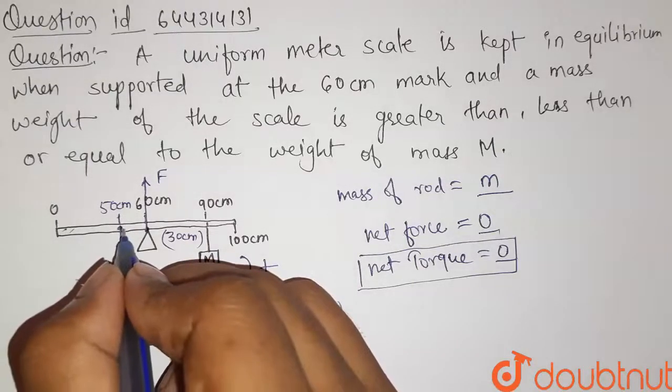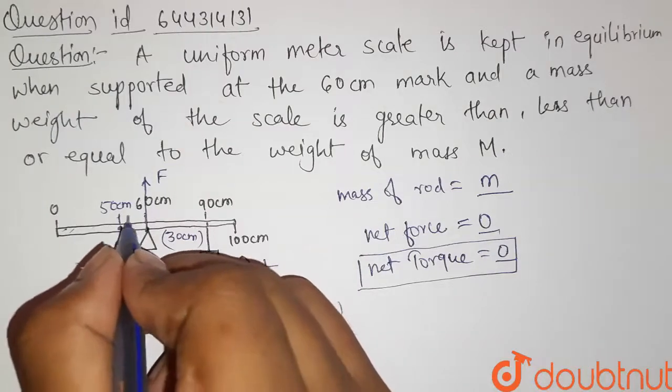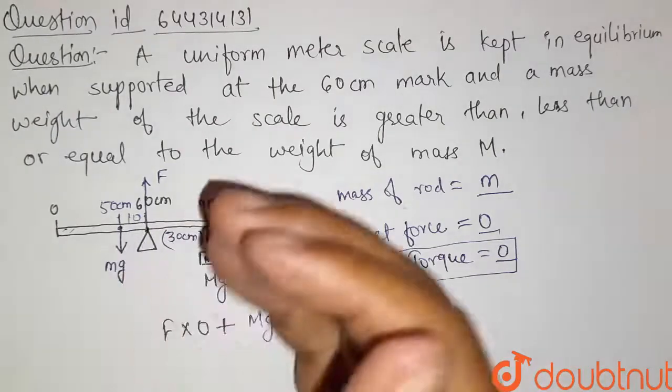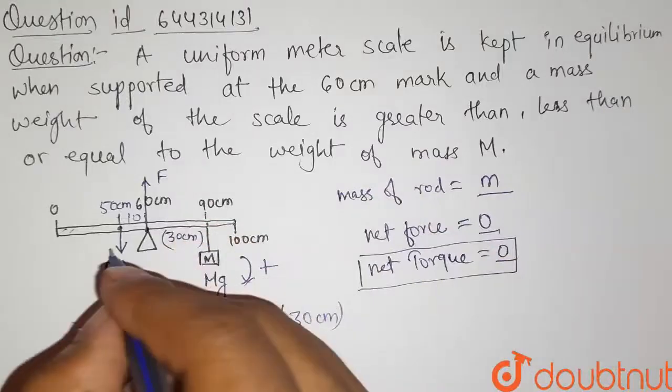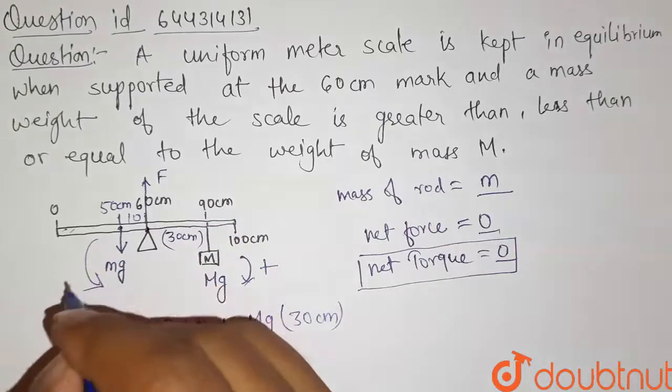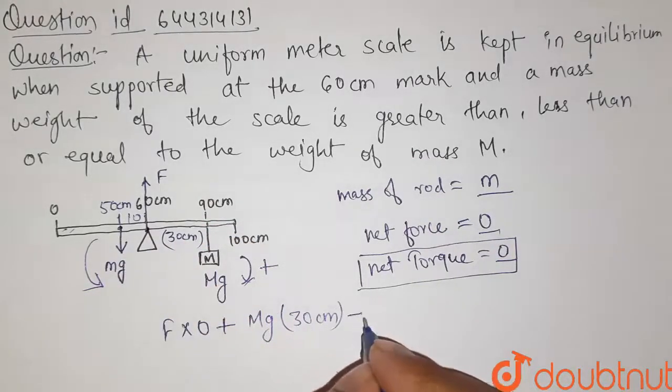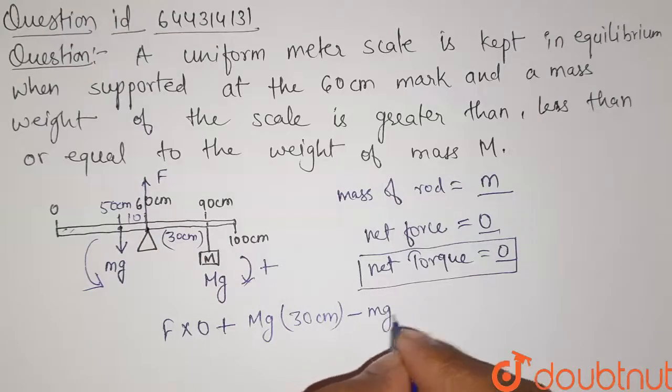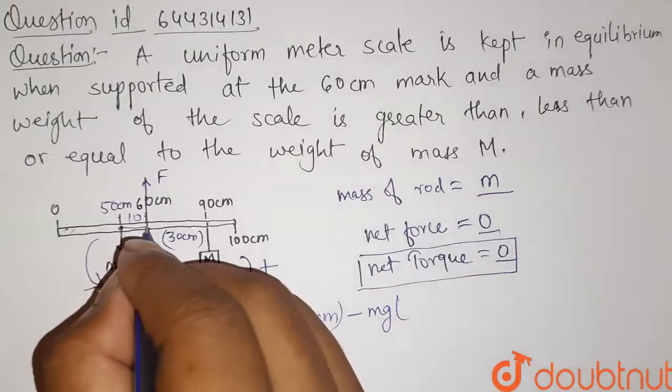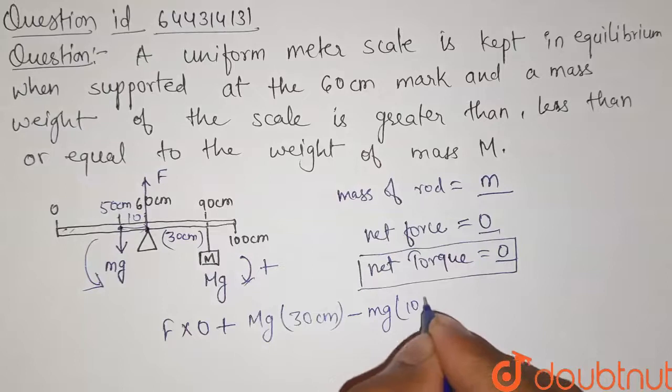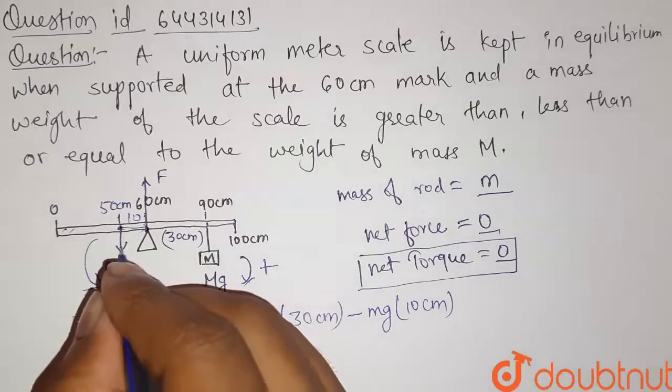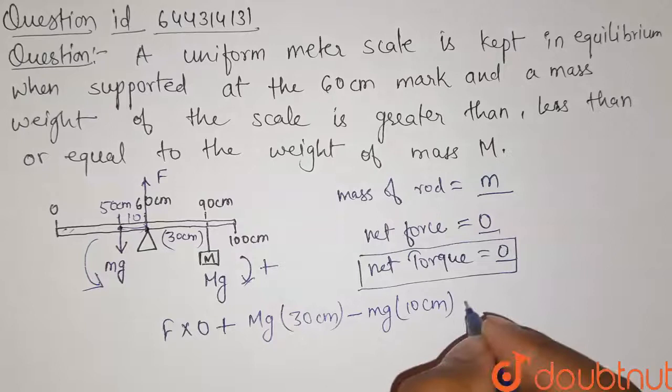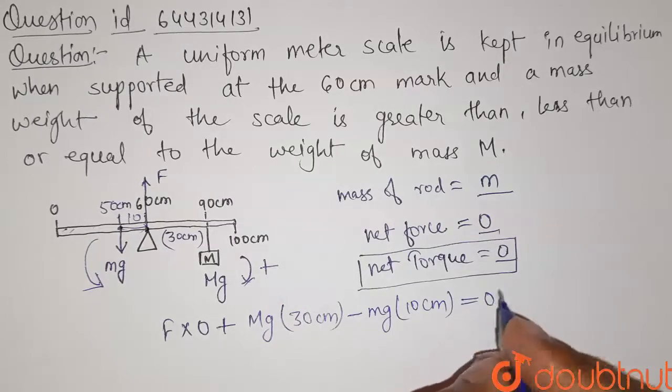And now this mass of rod is also exerting some torque. And we can see that this is in opposite direction, that is in anticlockwise direction. So we can write minus Mg into the distance here is 10 centimeter. So this is the torque due to this mass of rod and the net torque must be equal to zero.